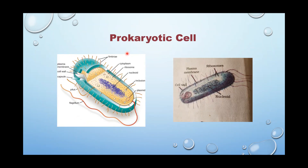Before we go to the nucleus, we need to understand what prokaryotes and eukaryotes are. Prokaryote means undefined or primitive nucleus — it doesn't have a nuclear membrane and is dispersed in the cytoplasm itself. We call such a nucleus a nucleoid. In a prokaryotic cell, the chromatin network is exposed directly into the cytoplasm. The nucleus contains a chromatin network, a thread-like woolly structure that carries DNA and genetic information. At the time of cell division, they pair up as chromosomes.